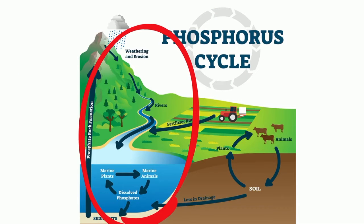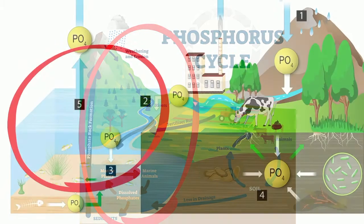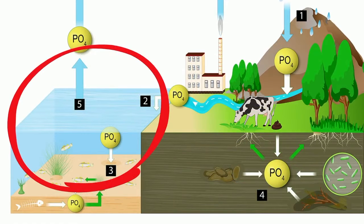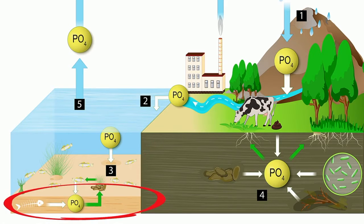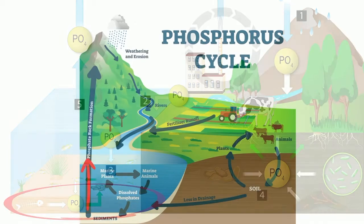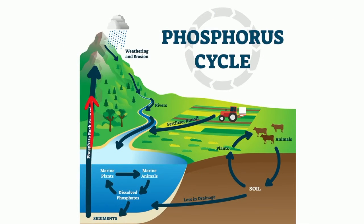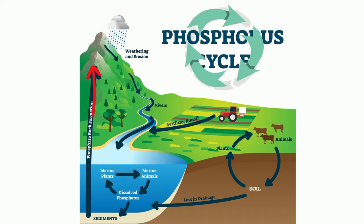Phosphorus-containing compounds may also be carried in surface runoff to rivers, lakes, and oceans, where they are taken up by aquatic organisms like phytoplankton. When phosphorus-containing compounds from the bodies or wastes of marine organisms sink to the floor of the ocean, they form new sedimentary layers. Over long periods of time, phosphorus-containing sedimentary rock may be moved from the ocean to the land, and then the cycle repeats.